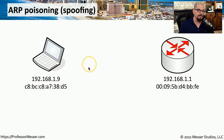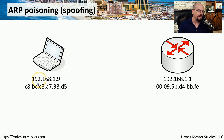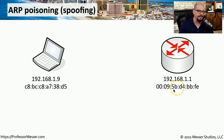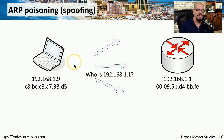Here's an example of ARP spoofing, where we have a laptop that will be logging in and using the command line on a router. The laptop has an IP address of 192.168.1.9, and the router is 192.168.1.1. You can also see the MAC addresses of these two devices — the laptop ends in a MAC address of 38d5, and the router ends in a MAC address of BBFE. The laptop knows the IP address of the router but can't communicate to it until it receives the MAC address, and the way you resolve that MAC address is by sending an Address Resolution Protocol broadcast.